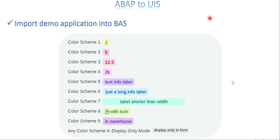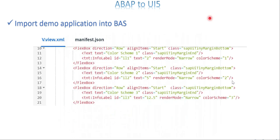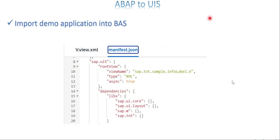To handle this better, we start with a very simple application — download it, upload it in your workspace, make some changes, and make sure it is working as expected. Then we'll move on to the next level of complexity for the same process. The application we are going to use is an info label, which gives a label with different colors. It has two major files: one is the view and the other is manifest.json, plus some support files needed to run the application.